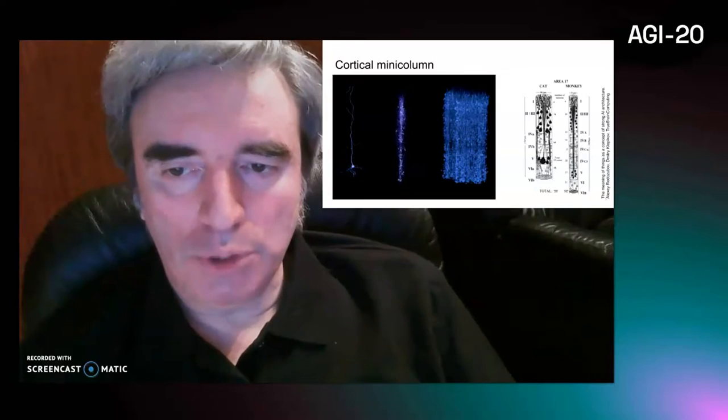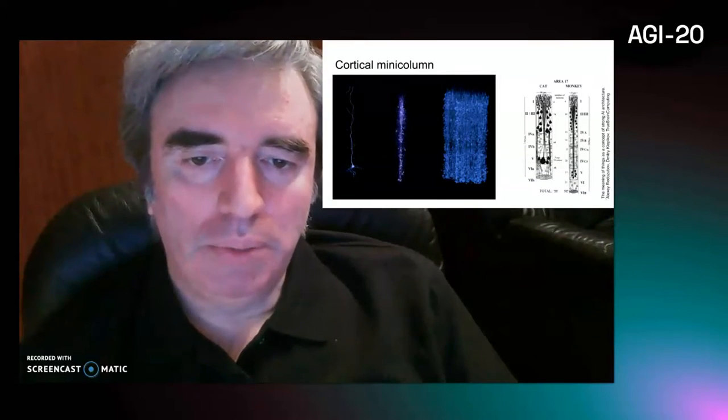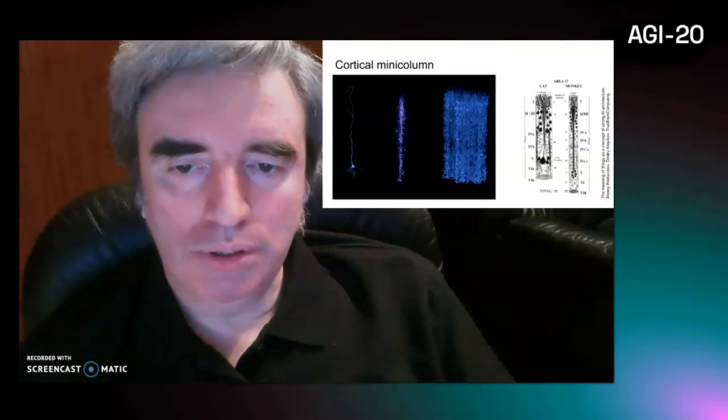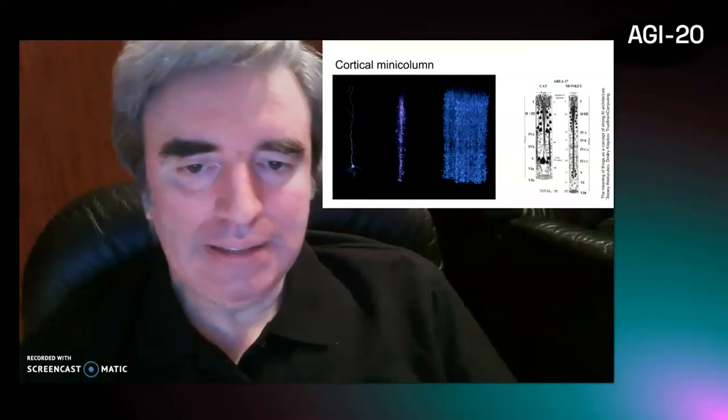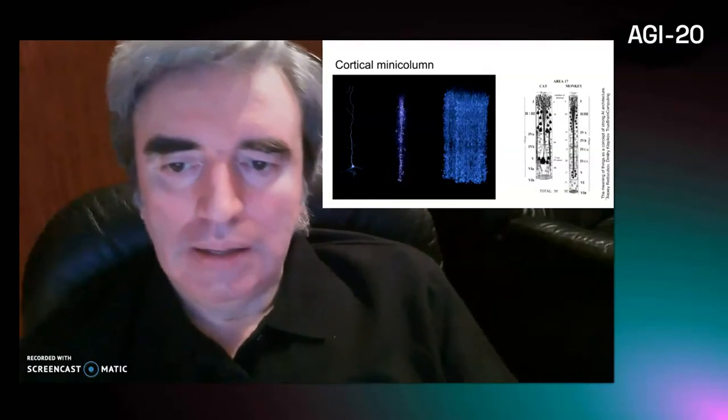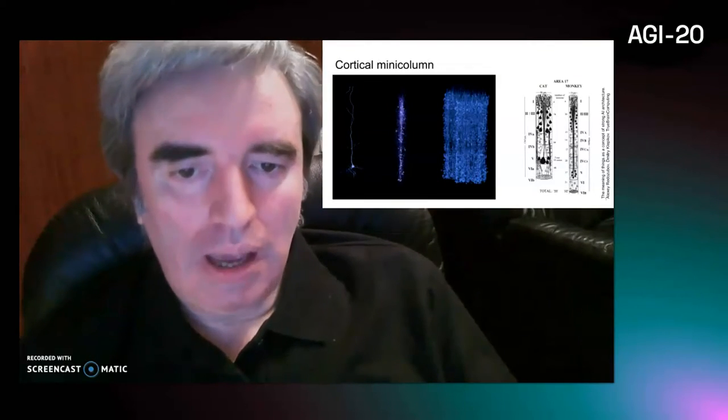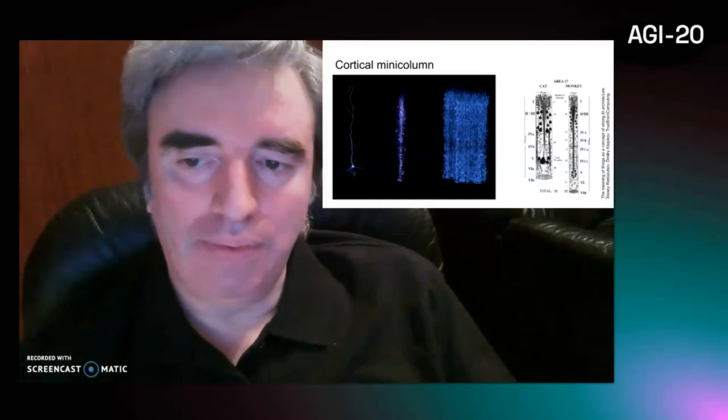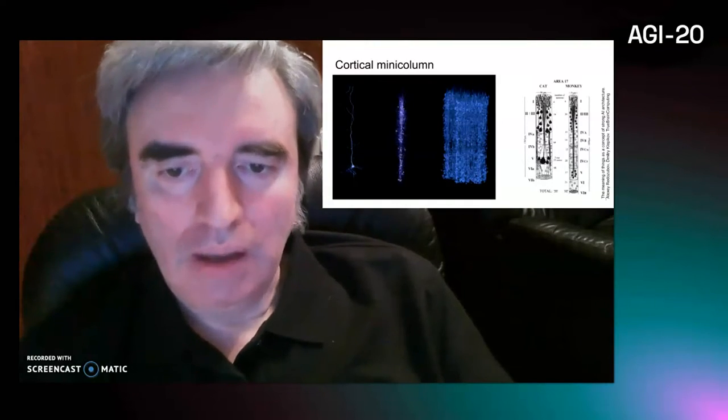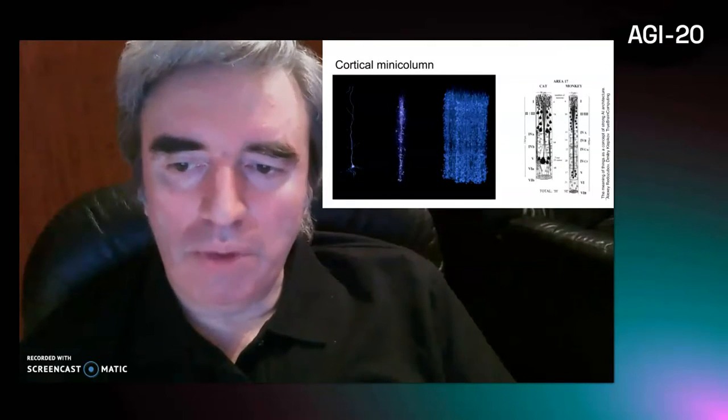We have shown that one neuron is capable of performing tremendous computational work. The main computational unit of the neuron is a cluster of receptors on the surface of the neuron. There are hundreds of such clusters per synapse, and one cortical neuron has an average of 10,000 synapses. Clusters are also mechanisms for memory formation.